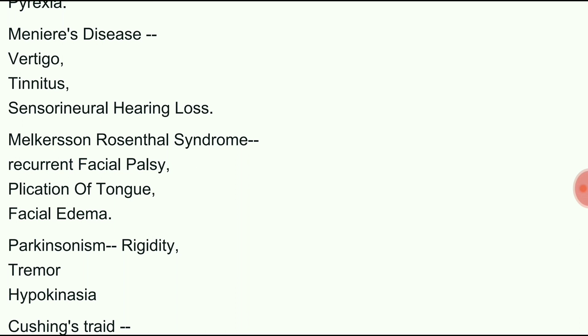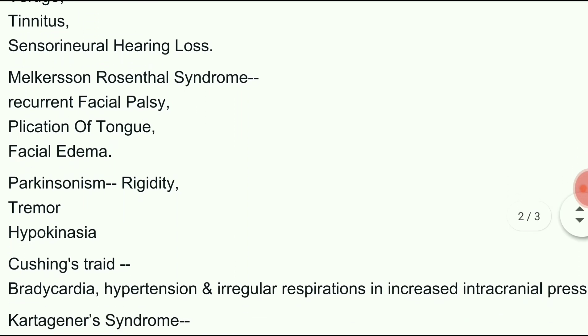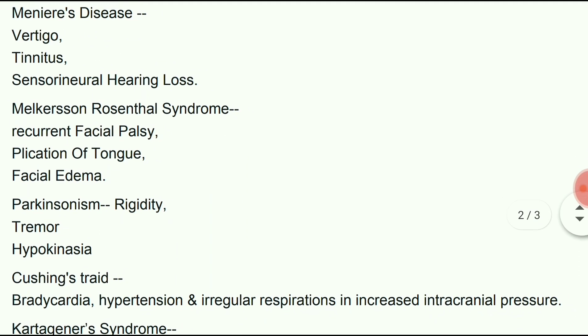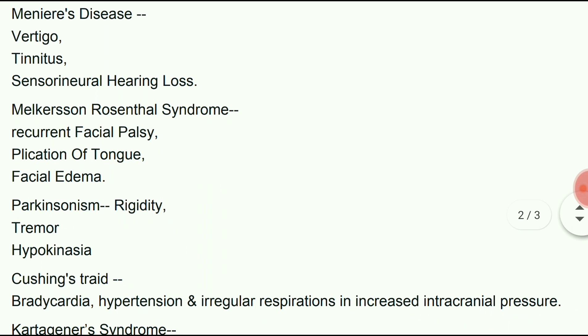Next is Cushing's triad. It includes bradycardia, hypertension and irregular respirations, seen in increased intracranial pressure.